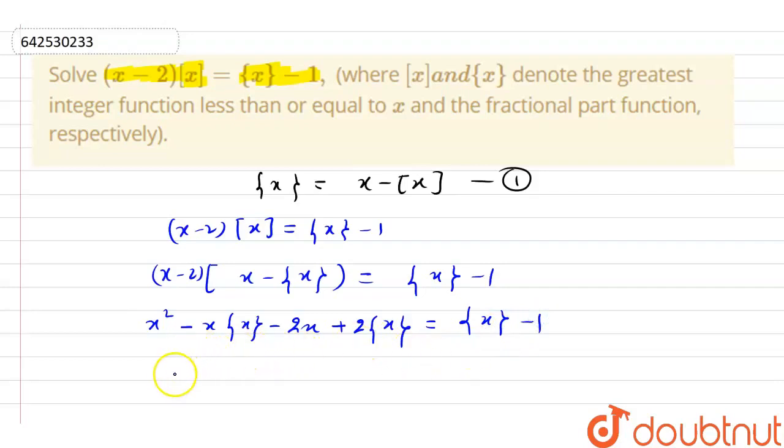Now here we have x square minus 2x plus 1, and there is fractional part x minus 2 times fractional part x plus x into fractional part x.